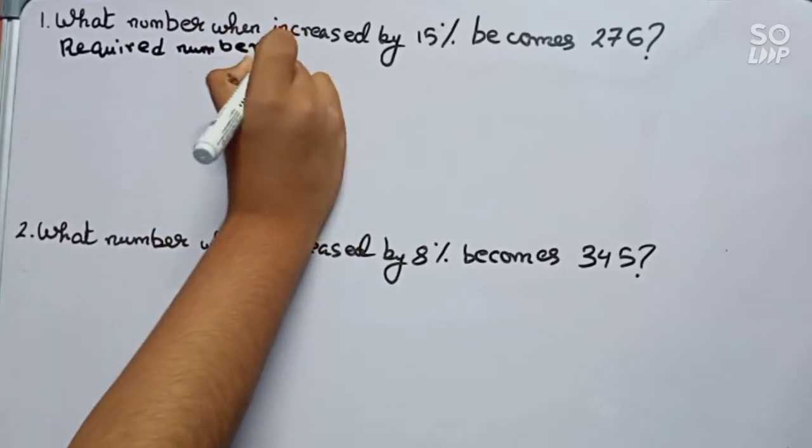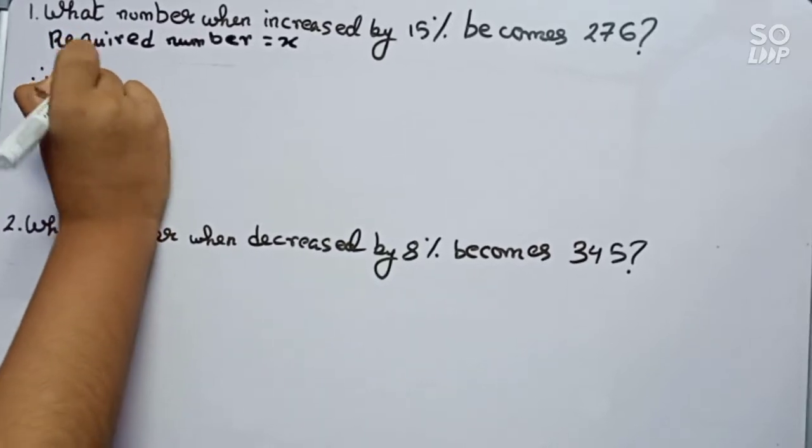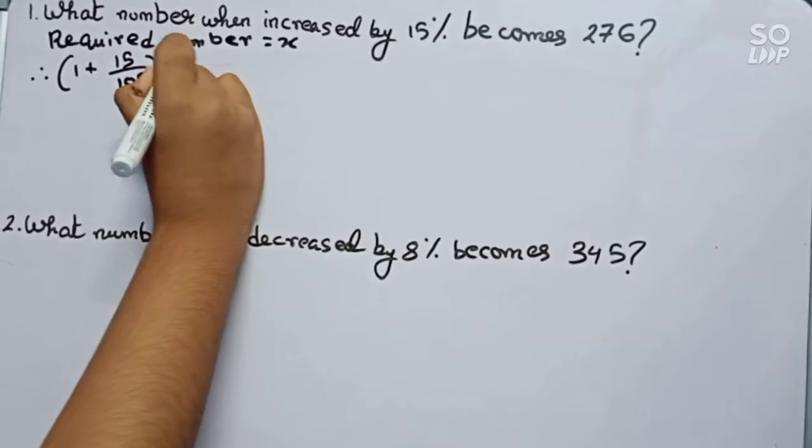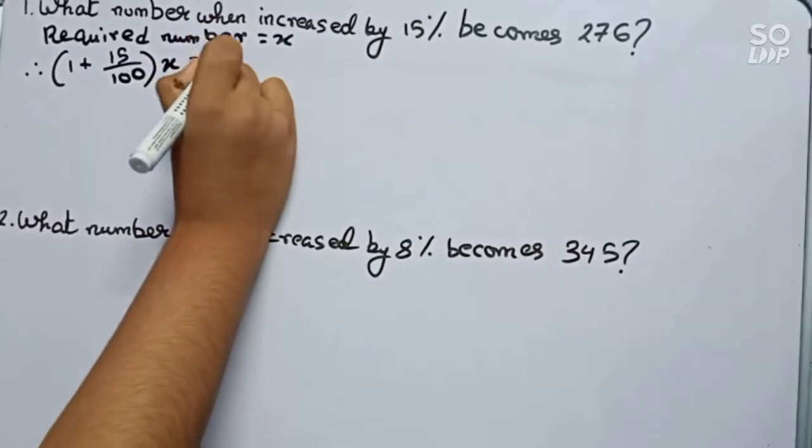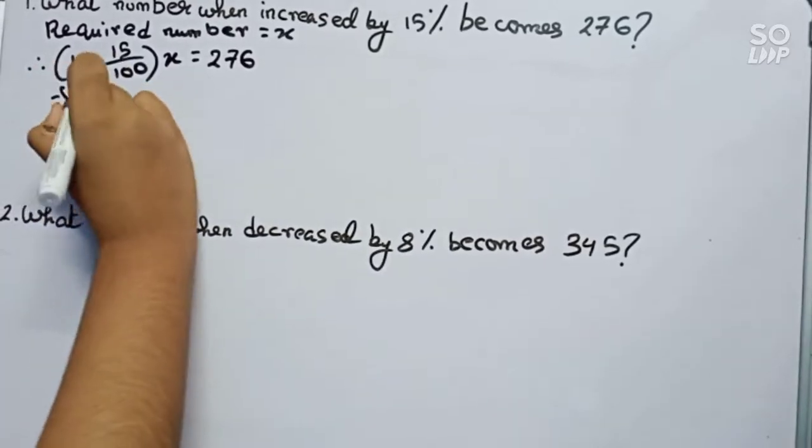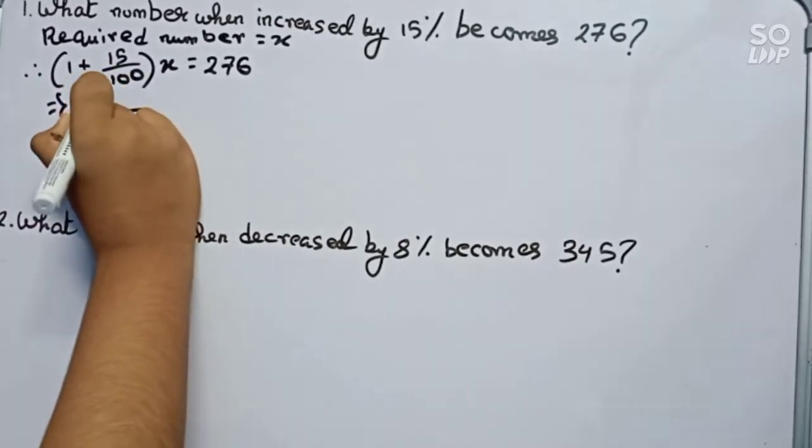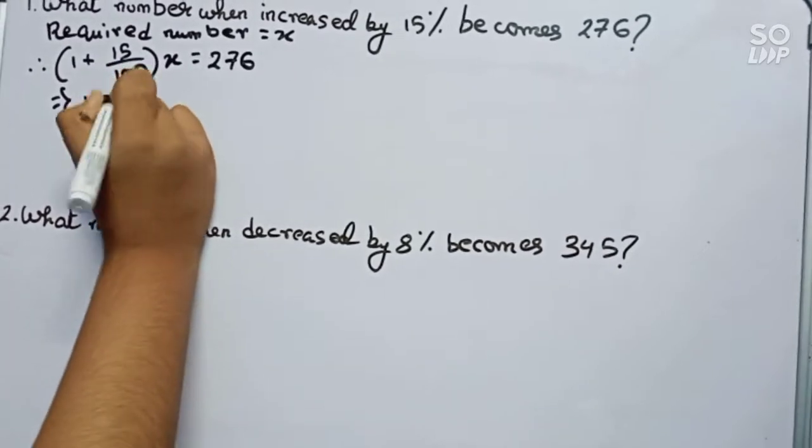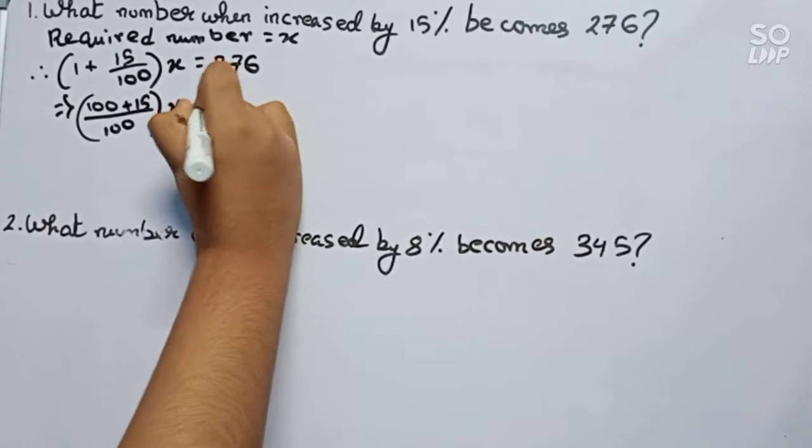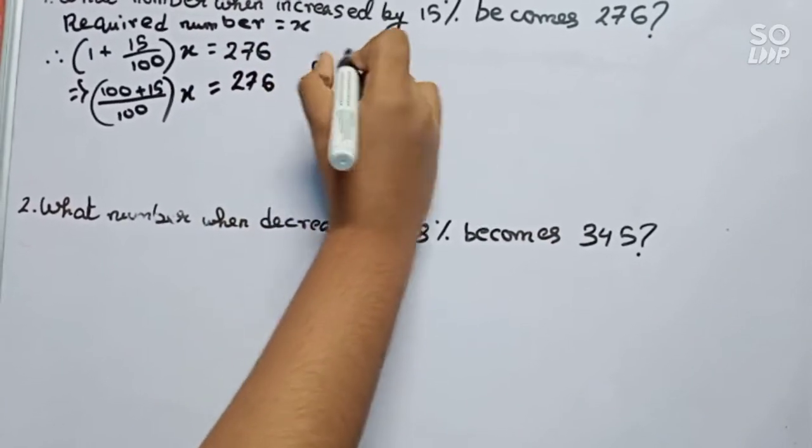We will take it as x. Therefore we can write it like this: (1 + 15/100) times x equals to 276, which equals to (100 + 15)/100 times x equals to 276, or 115/100 times x equals to 276.